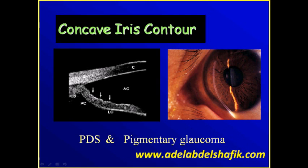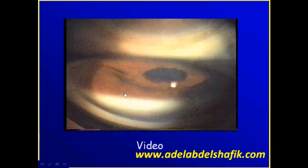A concave iris can be seen in cases of pigment dispersion syndrome and pigmentary glaucoma. On UBM you can see the peripheral part of the iris is concave. On the slit lamp, the central part of the iris is more pushed forward compared to the peripheral part. This concave appearance is characteristic of pigment dispersion syndrome, and if the tension is high we call it pigmentary glaucoma.